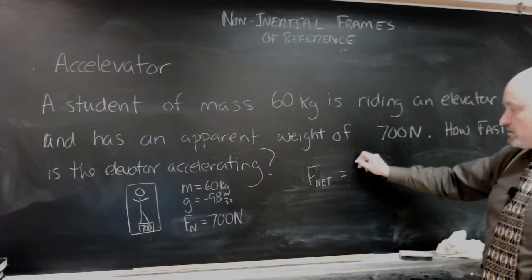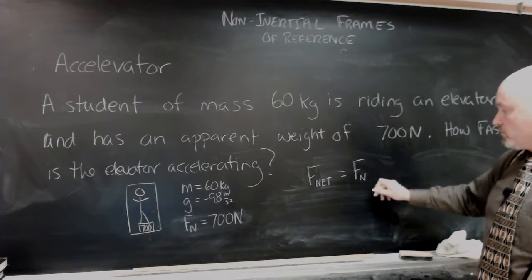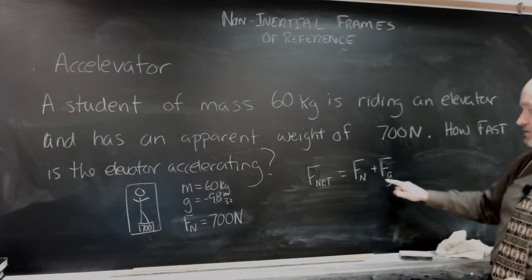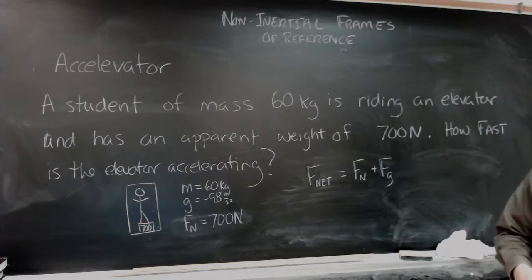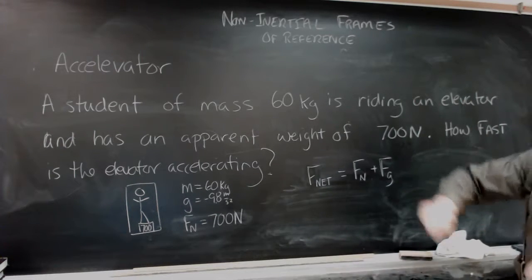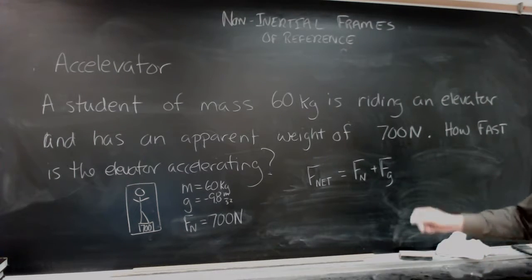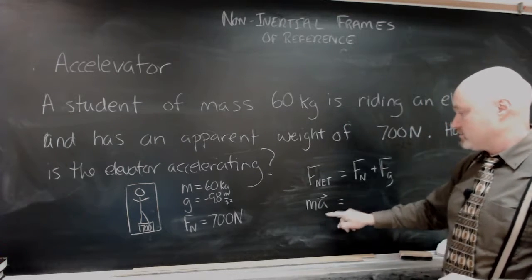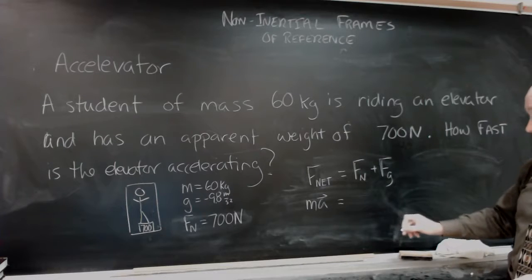And the net force is going to be equal to the normal force plus the force of gravity in this case. So, these are the two forces that are acting on our body, the body of that person over there. And the net force, of course, is going to be equal to the mass times acceleration, which is what we're really after.